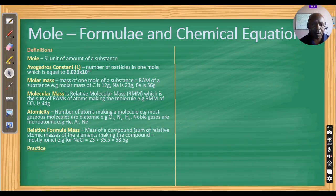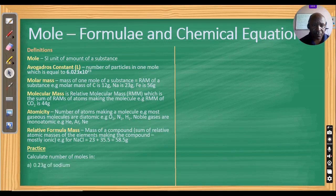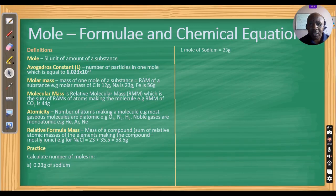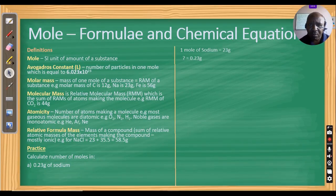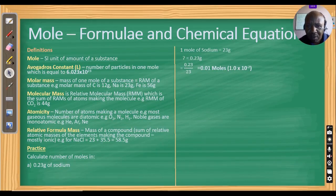Let us do some questions because in this topic there are many questions, and basically what comes in exams is calculated. For example, you may be asked to calculate the number of moles in 0.23 grams of sodium. The RAM of sodium is 23, so one mole of sodium is 23 grams. You divide 0.23 by 23 and get 0.01 moles.